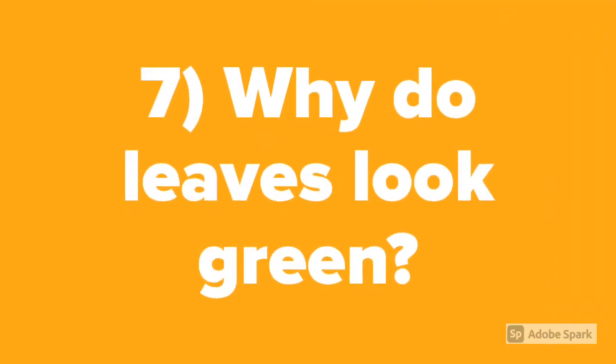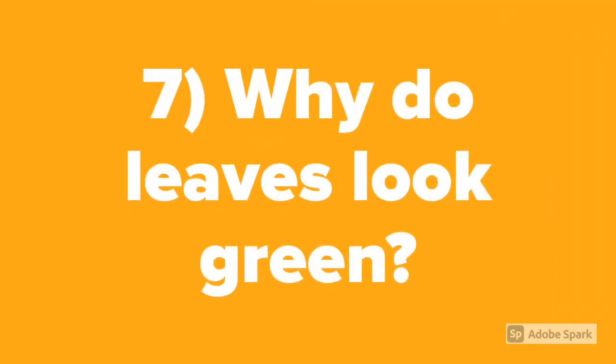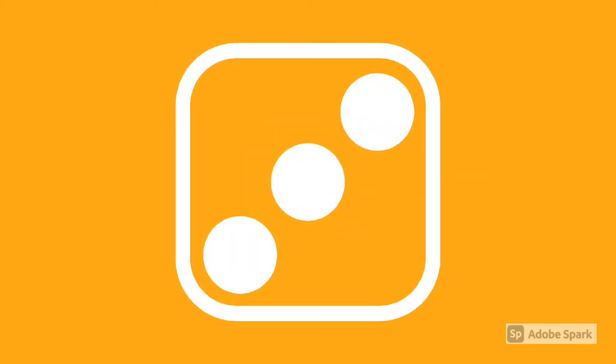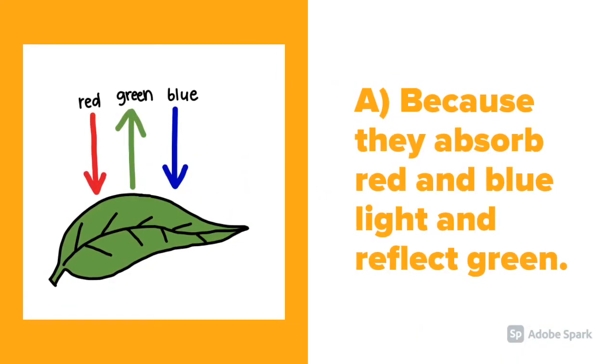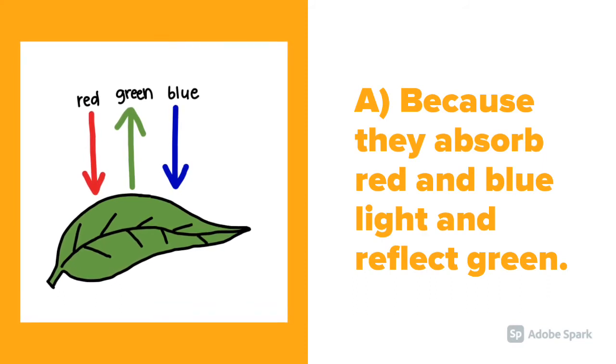Question number 7: Why do leaves look green? It is because they absorb red and blue light and reflect green light.